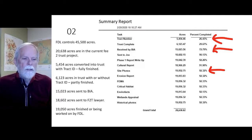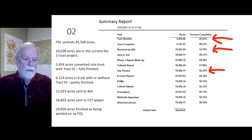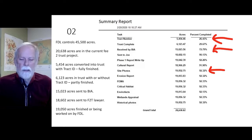6,000 acres are in trust with or without a tract ID and are partially finished. 15,000 acres have been sent to BIA, 18,000 acres have been sent to the fee-to-trust lawyer, and 19,000 acres are finished or are being worked on by Fond du Lac.